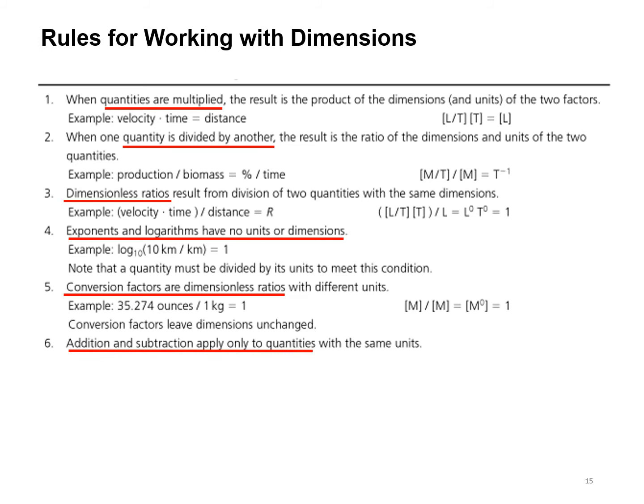When one quantity is divided by another, the result is a ratio of the dimensions and units of the two quantities. If we have mass per unit time as a production divided by mass, that means it's essentially the same as multiplying by one over mass. Mass in production is going to cancel out one over mass, and that's going to give you a per time value.